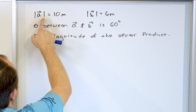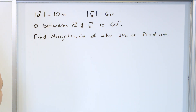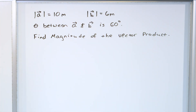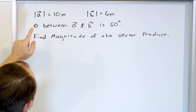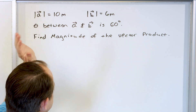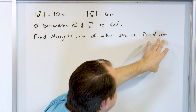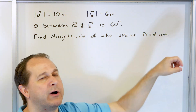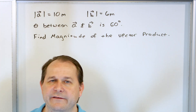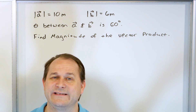Let's solve this problem. The magnitude of vector A is 10 meters long — this could be a displacement vector — and the magnitude of vector B is 6 meters long. The angle between vectors A and B in three-dimensional space is 60 degrees. We want to calculate the magnitude of the vector product. The term 'vector product' just means cross product; it's called that because the outcome is a vector, whereas the dot product produces a scalar, which is why we call it the scalar product.